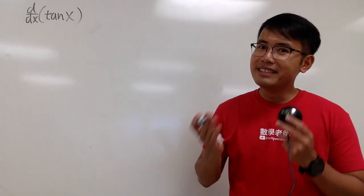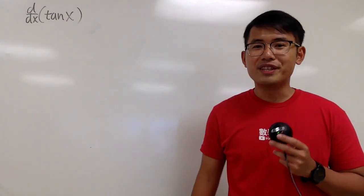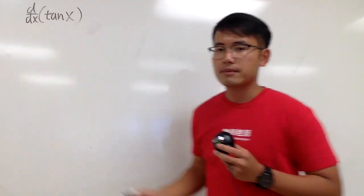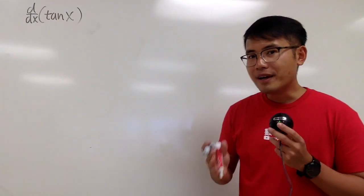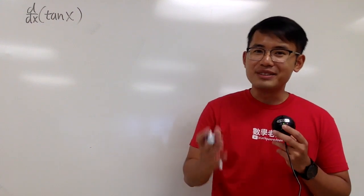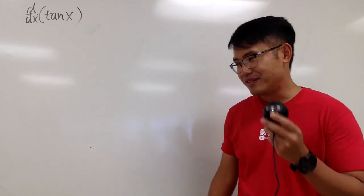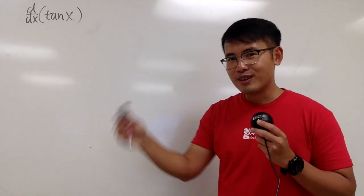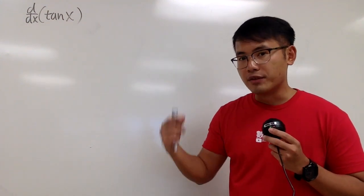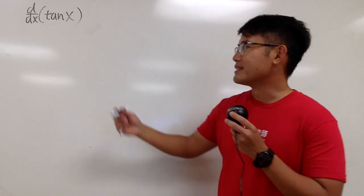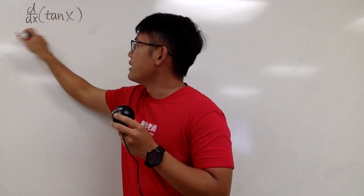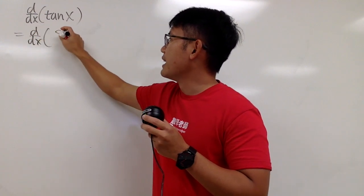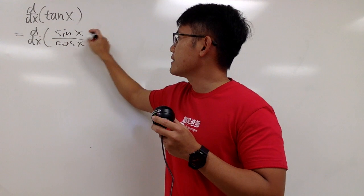To find the derivative of tangent x, you can still use the definition of derivative, but I'll leave that to you. Because I know tangent x is the same as sine x over cosine x, and we know the derivative of these two functions already. So instead of looking at tangent x as tangent x, let's change that to sine x over cosine x.